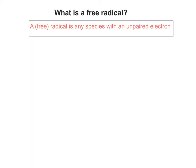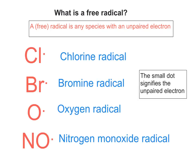So first of all, a radical is any species with an unpaired electron. These are the four most common radicals you'll come across on A-level questions and the small dot we've drawn next to each of them signifies the unpaired electron.